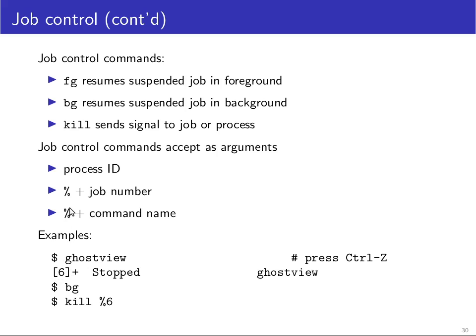You can also write percent followed by the name of the command, and the shell will look in its job list for a command of that name in case you've forgotten the job number. A very common use of the bg command is if you accidentally started an application as a foreground process but actually wanted it as a background process — for example a GUI application such as GhostView, a PostScript file viewer.